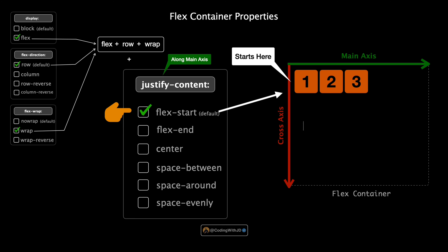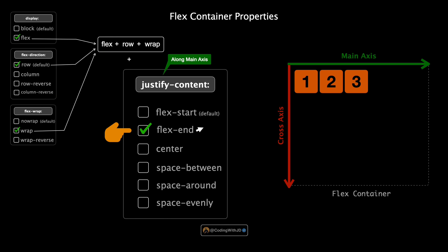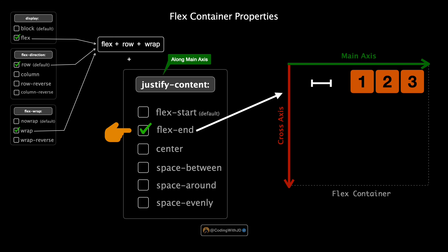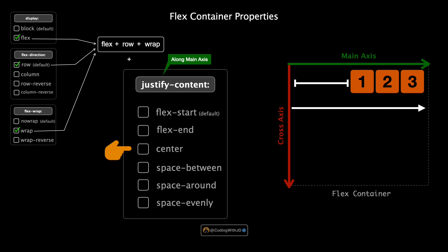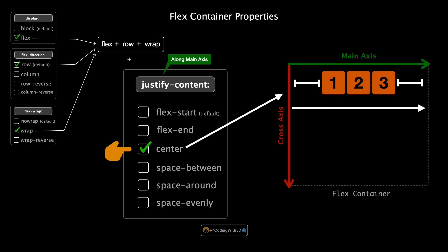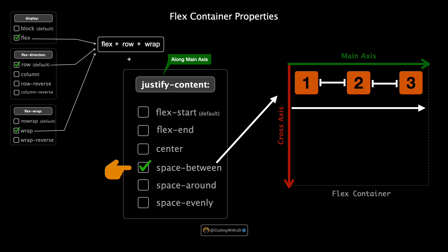By default, justify-content is set to flex-start, meaning all flex items are packed towards the start of the main axis — on a row that's the left side, and on a column that's the top. Next, flex-end shifts all items to the end of the main axis, so on a row they move to the right and on a column to the bottom. Switching to center gives a neat middle alignment — items are perfectly centered along the main axis, especially useful in headers or footers. Now space-between distributes items so they have equal spacing between them — the first item is at the start, the last at the end, and the remaining space is split evenly in between.